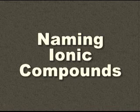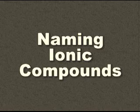Before we can learn about the IUPAC, we must learn how to name ionic compounds. An ionic compound has two parts: a cation with a positive charge and an anion with an equal but negative charge. The cation always comes first in the chemical name.